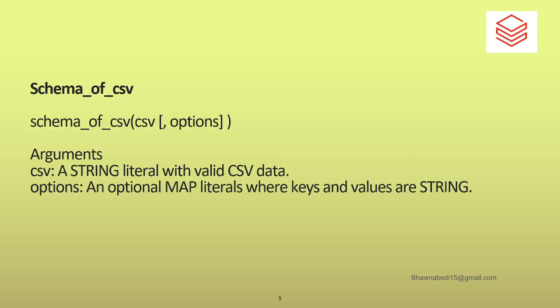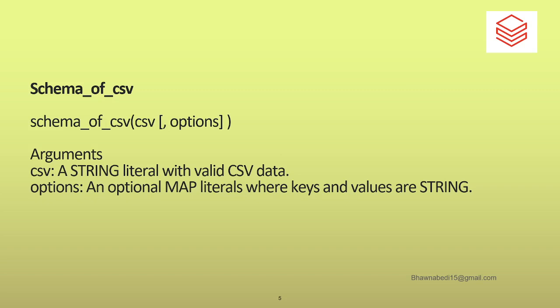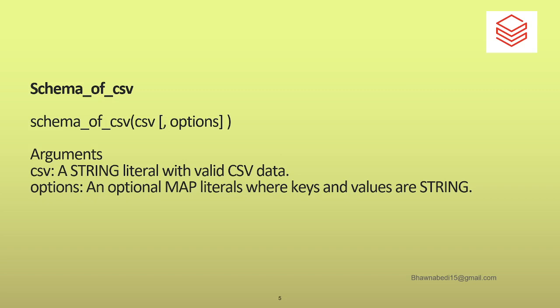Similarly, when you talk about schema_of_csv: to parse a column which has a CSV string you need a schema. You can manually give that schema, or you can also use the schema_of_csv function to provide that schema. For schema_of_csv, you need to pass in a string literal or your CSV format data so that the function can take it in and give you the whole schema of that CSV. Both from_csv and schema_of_csv return a struct type.